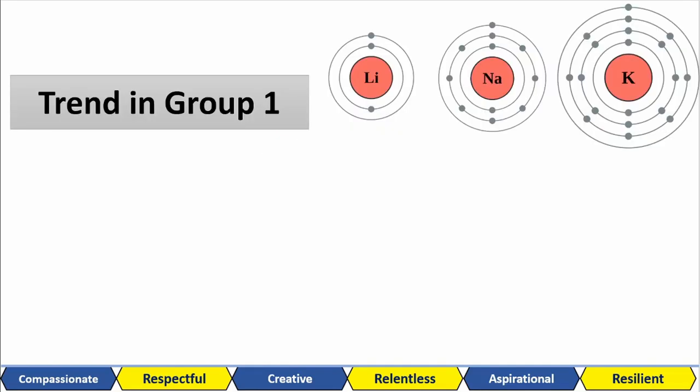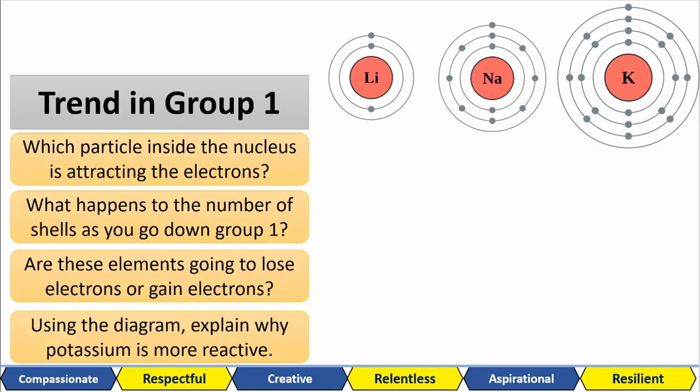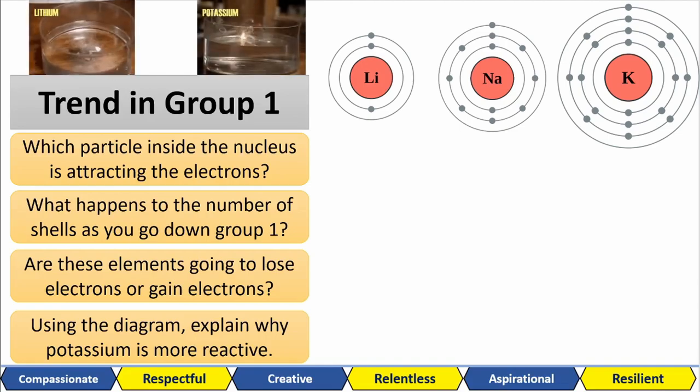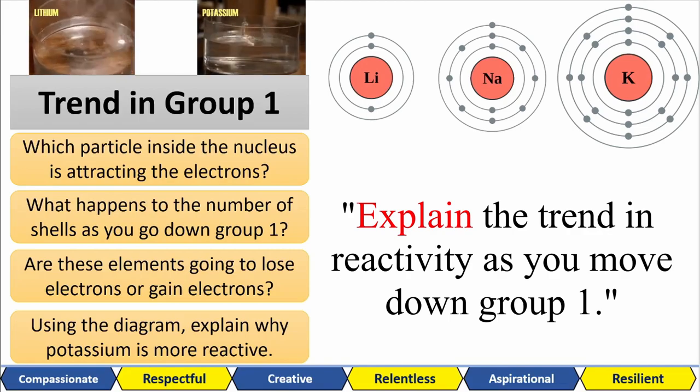The final thing we have to see is the reasons for the different reactivities as we move down group 1. Here is a little reminder of that. Remember, lithium was not as reactive as potassium. And sodium was more reactive than lithium but not as reactive as potassium. You could get a question asking you to explain the trends as you move down group 1. And this could easily be a 5 or 6 mark question. So let's not take this as a joke. By answering each of these smaller questions, you should be able to gain the majority of your marks. Pause the video and have a go answering these 4 questions.